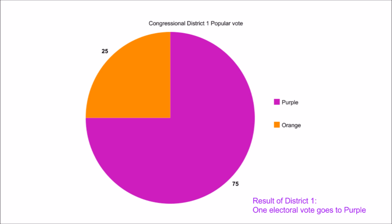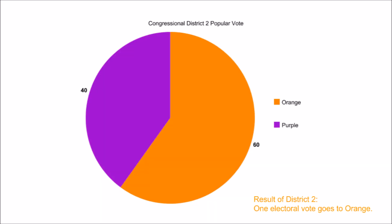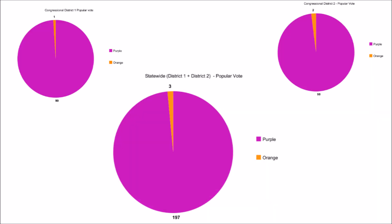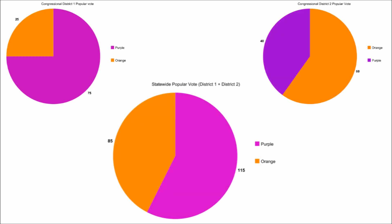In Maine, if Candidate A has a majority or plurality of the votes in District 1, Candidate A gets one electoral vote. If Candidate B wins a majority or plurality of the votes in District 2, Candidate B gets one electoral vote. Then, whichever candidate wins more votes overall gets two electoral votes for carrying the state. In this way, it is possible for one candidate to win all four electoral votes, or for the electoral vote to be split 3-1.